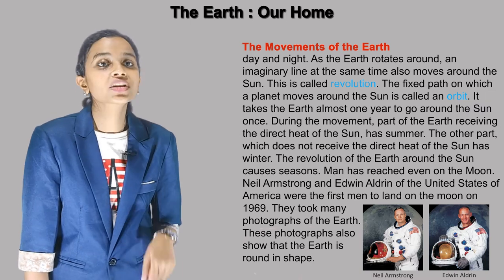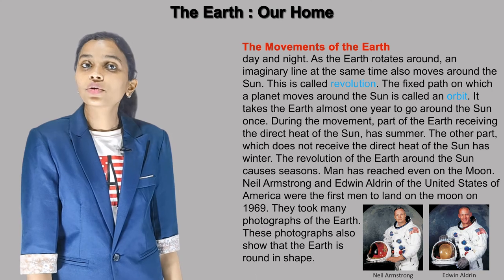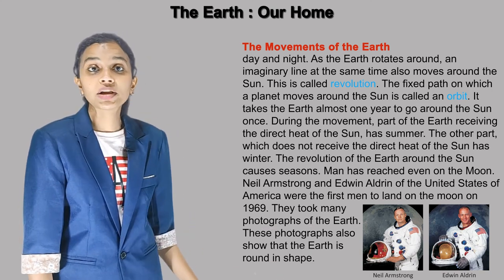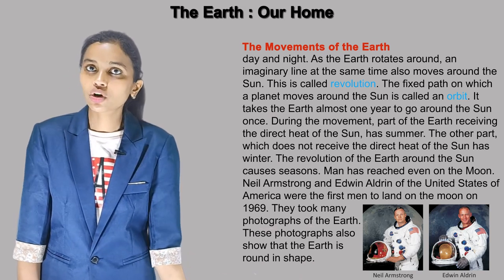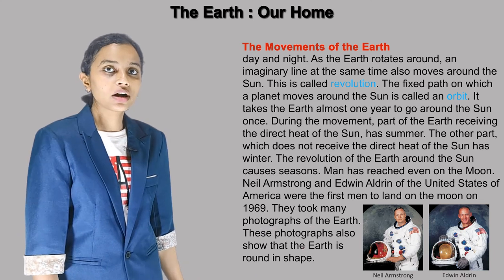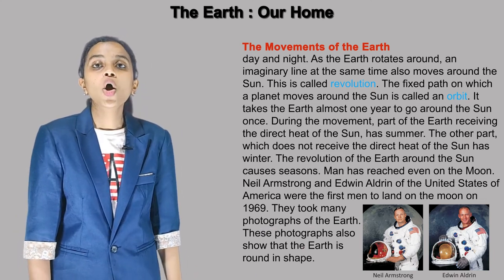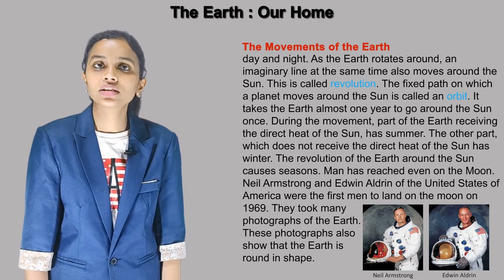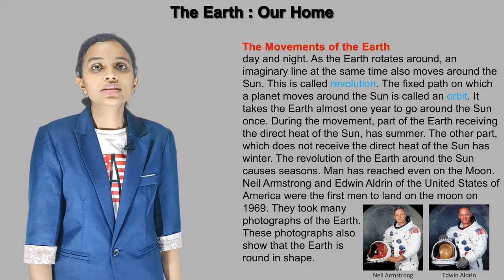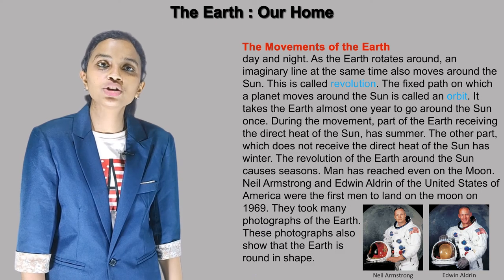Man has reached even the moon. Neil Armstrong and Edwin Aldrin of the United States of America were the first men to land on the moon in 1969. They took many photographs of the earth, and these photographs also show that the earth is round in shape.